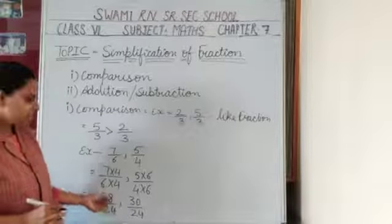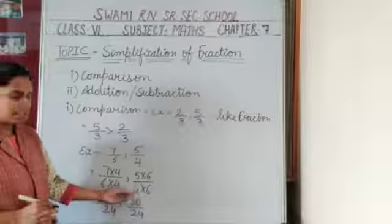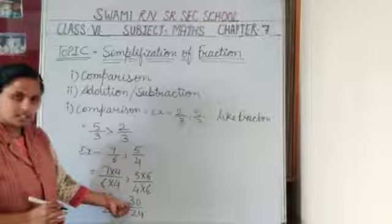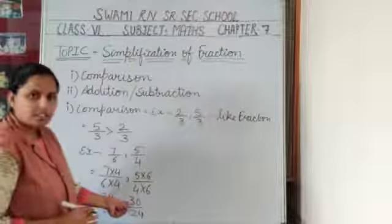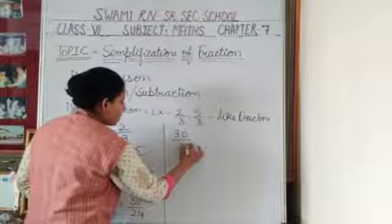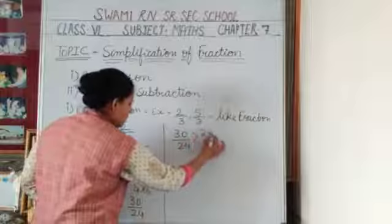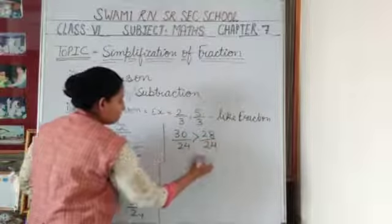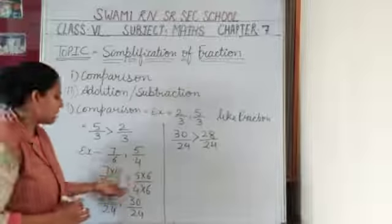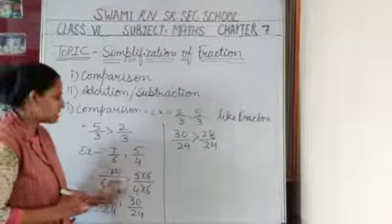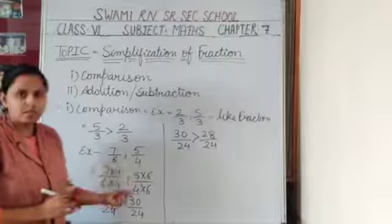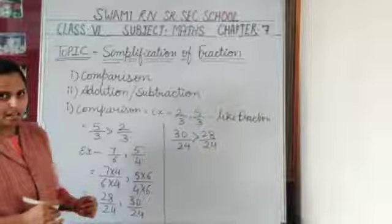Now these are like fractions. We compare the numerators: the first number is 28 and the second number is 30. Which one is greater? 30 is greater than 28. So 30 upon 24 is greater than 28 upon 24. This is the method to compare fractions. You can also solve by cross multiply directly — that is fine too. This concludes the comparison section.